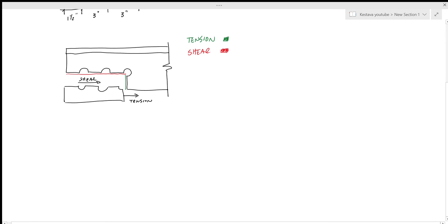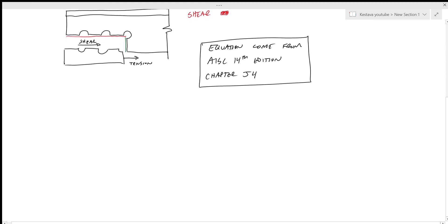First thing we need to do, as denoted by AISC, block shear can be calculated and shows the equations to get there in chapter J. So J4, you have the equations for strength of elements in shear as well as strength of elements in tension. It's a combination of those two things that create your block shear strength equation. If you're wondering where these equations are coming from, they're directly in your steel manual at those locations. So equations come from AISC 14th edition chapter J4.